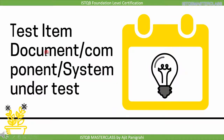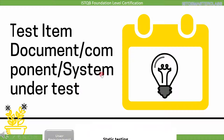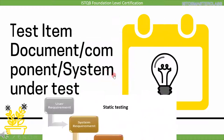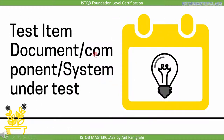The next term is test item, also known as test object. It is any document, component, or system which is under test. In the requirement stage, requirement is our work product, and if this has to be reviewed, then requirement is referred to as test item. Similarly, if we are in the implementation stage, the output is code, and if we want to perform testing on it, then code is our test item. So the output of a stage is called work product, and if testing is performed on it, it is called a test item.